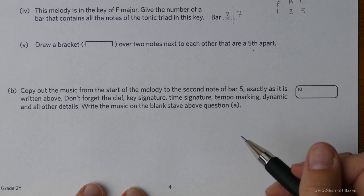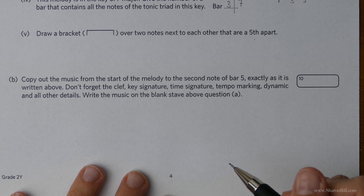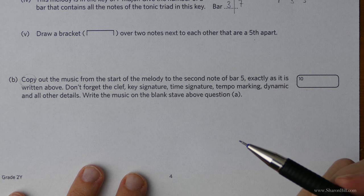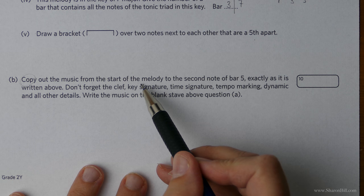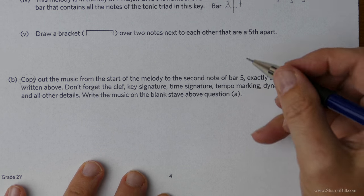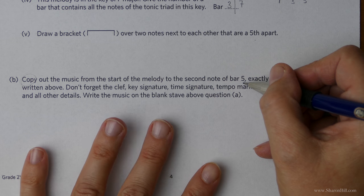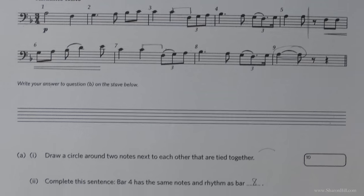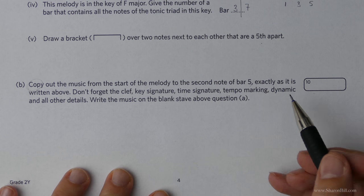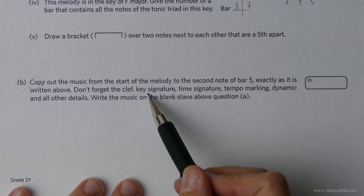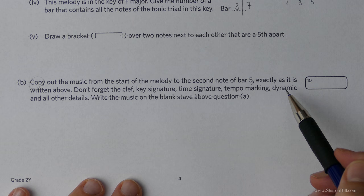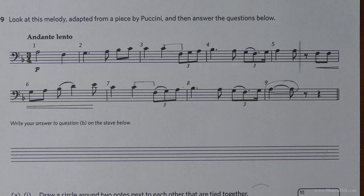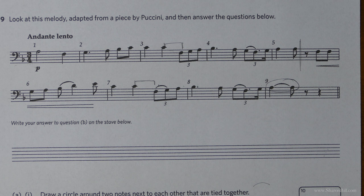And so now this next part of the question really is the easiest ten marks you can hope for because all we are doing is copying. We're copying from the start of the melody to the second note of bar five. So be very careful that you copy exactly what they've asked. So we're only going to the second note of bar five. They tell us even what to watch out for. Don't forget the clef, the key signature, the time signature, the tempo marking, the dynamics and all other details. Basically anything you see you copy. And don't forget at the start of the paper it told us that marks may be lost if our answer isn't neat and clear.